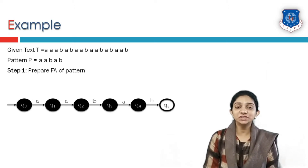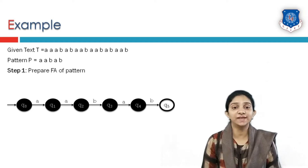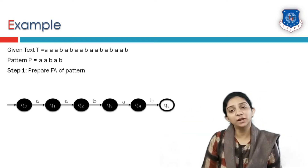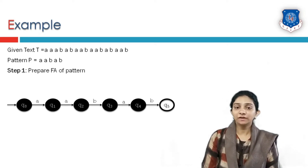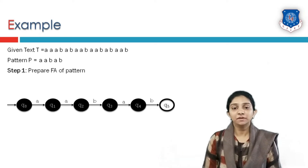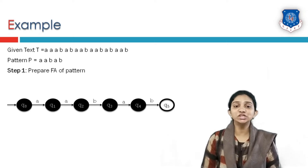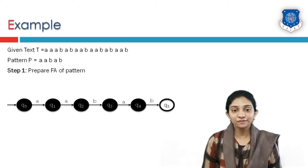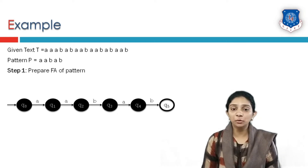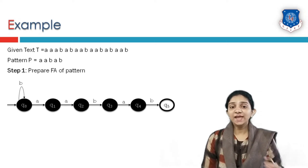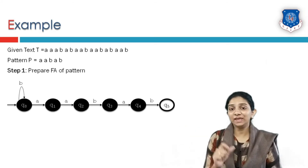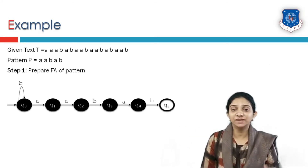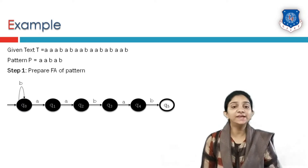We have to find out transitions for each and every input emerging from a particular state. The set of inputs are only two symbols: A and B. To complete the finite automata we must find the transition on each input from each state. At q0, input A leads to q1. If the input is B, since pattern AABAB does not match any input starting with B, the transition on B from q0 leads back to q0 itself.